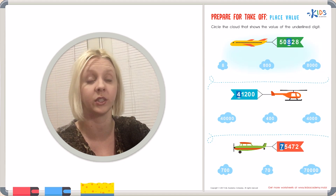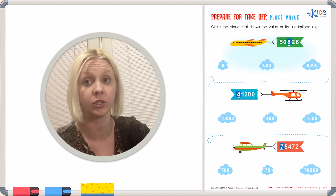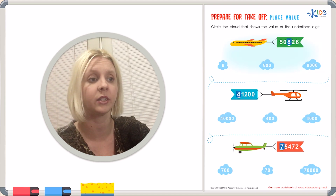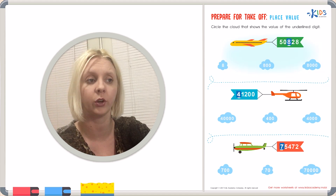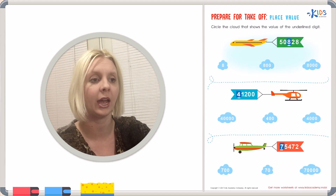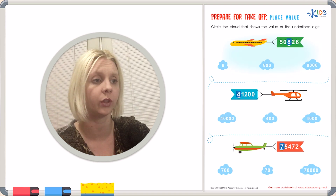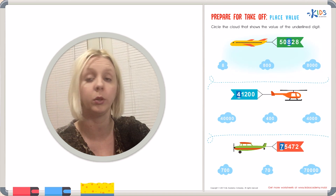It's not just the number. Like this one, for example, isn't just 8. Because of where it is, we have to figure out how much that's worth. And we're going to decide how much it's worth and circle it below in our clouds.